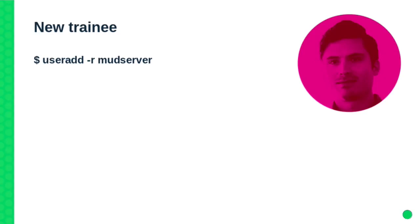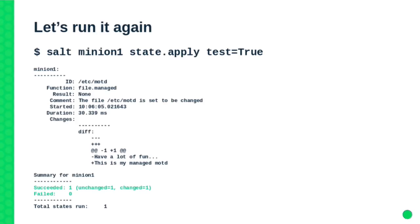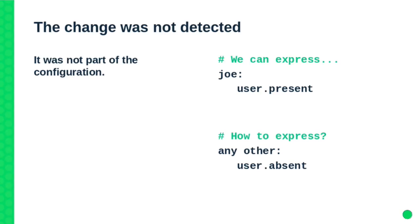So a new trainee comes to the company. He's given access to the servers and the first thing he does is install a Minecraft server on one of the production servers. He adds a user and runs the process there. So we run again the state application in test mode and we get exactly the same result back — it tells you the /etc/motd file is different. But what about the user the trainee just added? It's not mentioned anywhere. The change was not detected. It's not part of the configuration. We didn't tell Salt anything about this user. Salt is checking policies against what we told it, but everything else is fine.